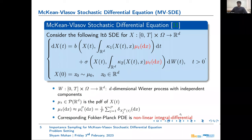If we approximate this distribution by some empirical distribution with capital P particles, we can plug this into the law and recover the stochastic interacting particle system. So the interacting particle system is actually a strong approximation to the McKean-Vlasov stochastic differential equation.